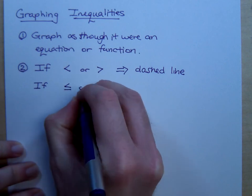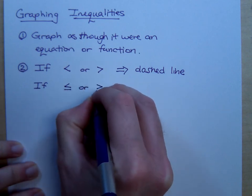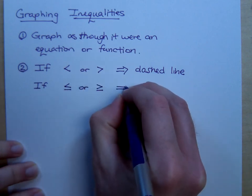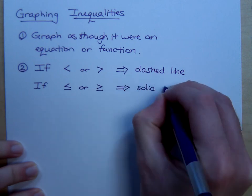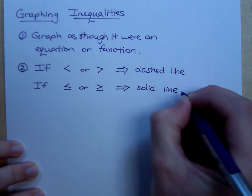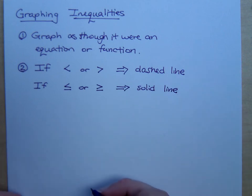However, if it's less than or equal to, or greater than or equal to, it's going to be a solid line, just like you would have had a filled in circle. Is everybody with me on that?